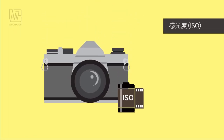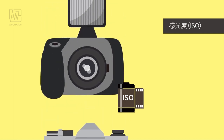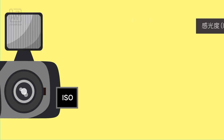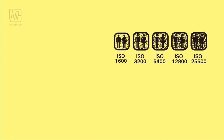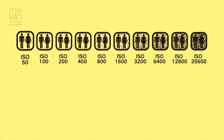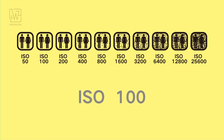ISO is a concept from the period of traditional film. It refers to the film's sensitivity towards light, and present-day digital cameras inherit this term. The bigger the ISO, the bigger the sensitivity, but also the bigger the particles on the photo and more noise. Smaller ISO means lower sensitivity, and the photo will be less grainy and cleaner. ISO 100 is the most commonly used value.